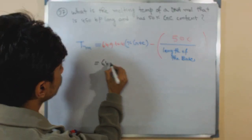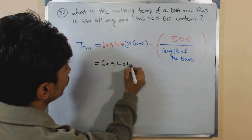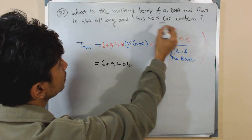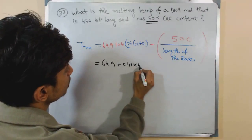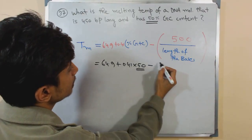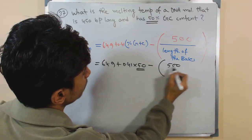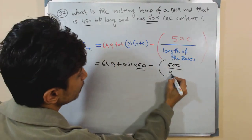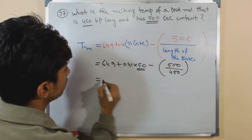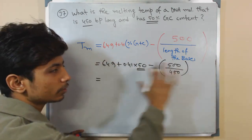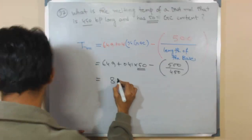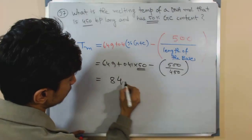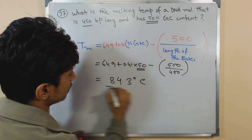Simply write it down: 64.9 plus 0.41 multiplied by - the GC content is 50%, so it's 50 - and 500 divided by the number of bases, which was 450. Put the values in there, and if you do all the calculations, the answer will be 84.3 degrees Celsius.